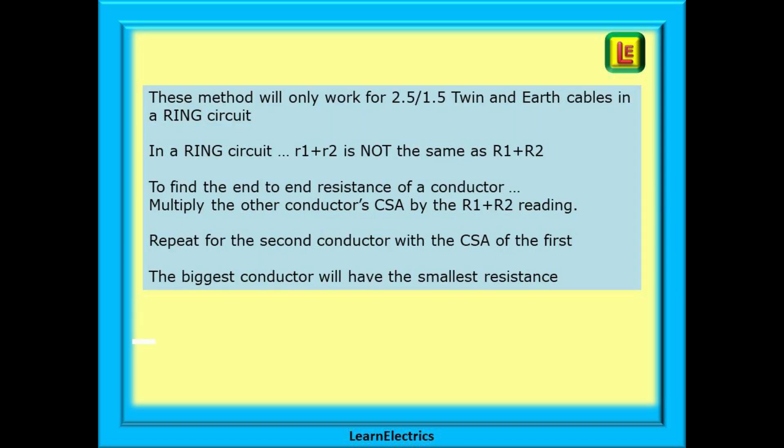In summary, this method will only work for 2.5 1.5 twin and earth cable in a ring circuit. In a ring circuit, little R1 plus little R2 is not the same as big R1 plus big R2. To find the end-to-end resistance of a conductor, multiply the other conductor's cross-sectional area by the big R1 plus R2 reading.